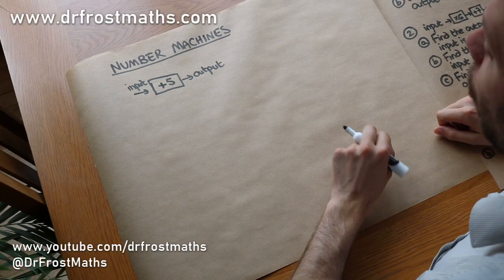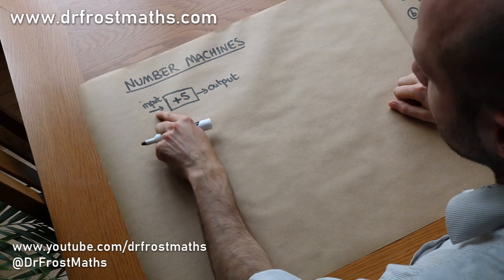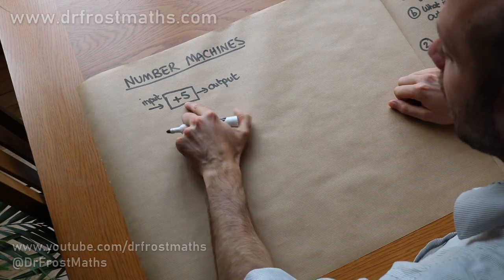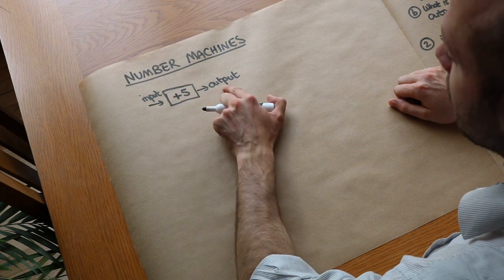Hello and welcome to this video on number machines. Now all a number machine is, is something that takes an input, does something to it, whatever's in this square, and then it spits out a number.